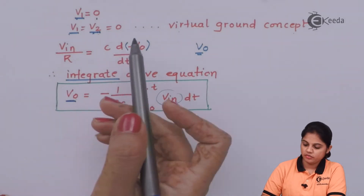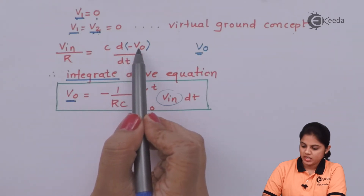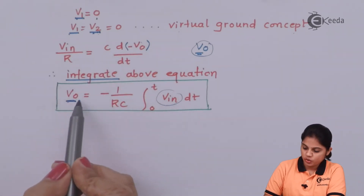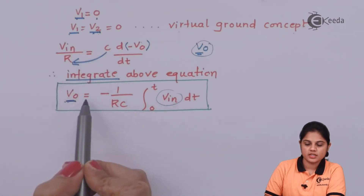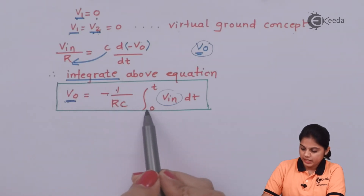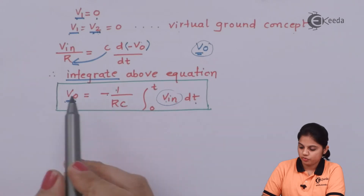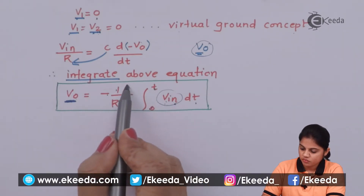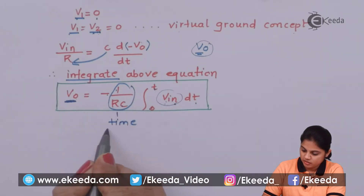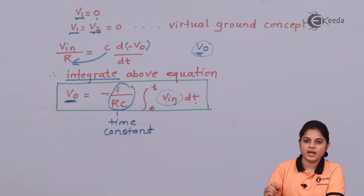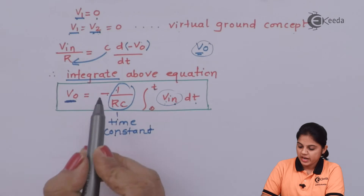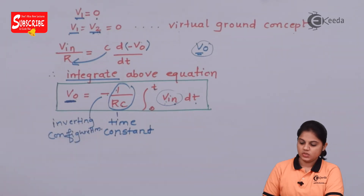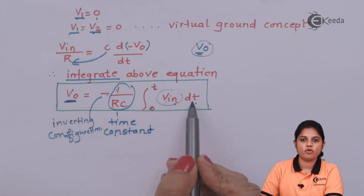From this expression, V-in / R = C × d(−V0)/dt, solving for V0 by integrating gives: V0 = −(1/RC) × ∫₀ᵀ V-in dt. The output voltage is directly proportional to the integration of the input voltage. The term 1/RC is the time constant, because the capacitor takes some time to charge and discharge. The negative sign indicates the inverting configuration.